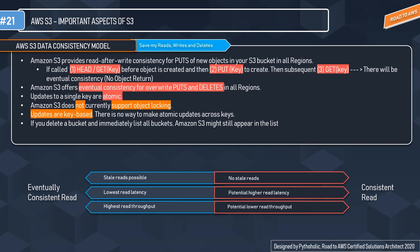Updates to the key are atomic. This means that if you make a PUT request to an existing key, an immediate read to that key might return old data or updated data, but it will never return corrupted or partial data — that's the atomic property. Also, Amazon S3 does not currently support object locking, so if two PUT requests are sent simultaneously to the same key, the request with the latest timestamp wins.